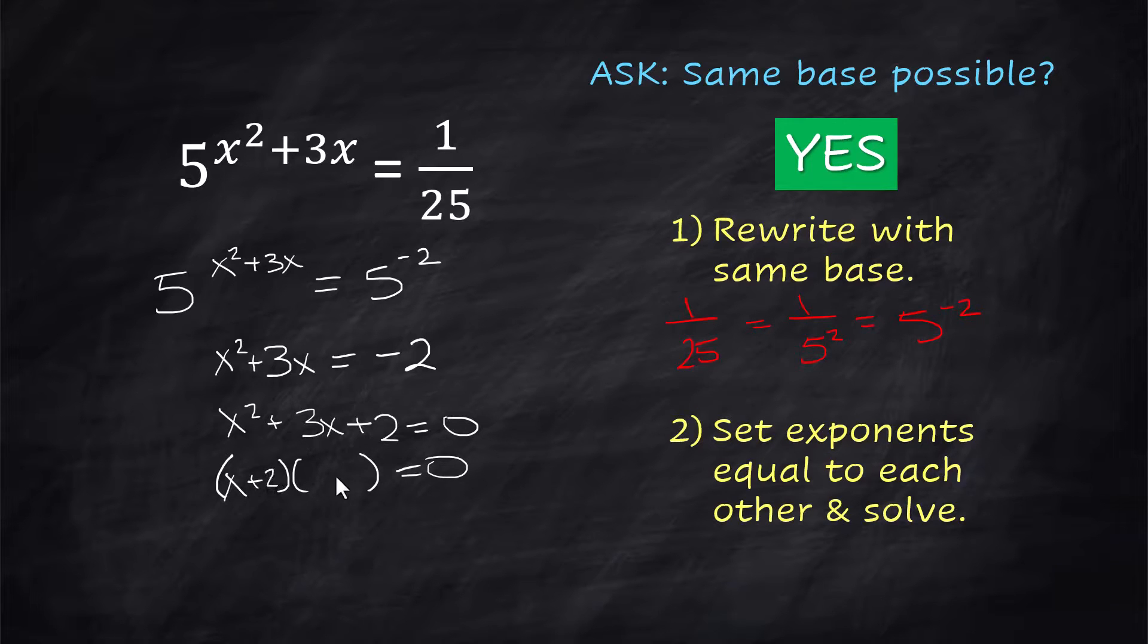(x + 2)(x + 1). Our two solutions are x = -2 and x = -1. I think we need to check those, though. Let me make some room for checking.